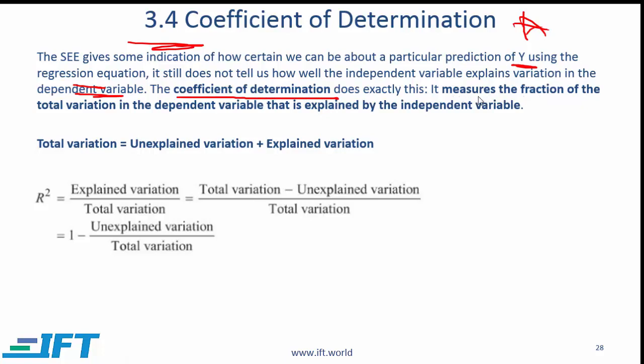This measures the fraction of total variation in the dependent variable that is explained by the independent variable. Total variation is equal to unexplained variation plus explained variation. Now what does this mean? I'll give you a picture that is not 100% precise but will give you a sense for what we are talking about.